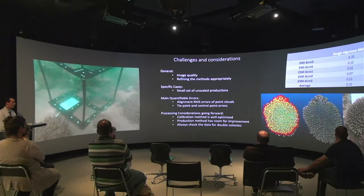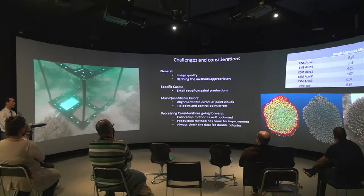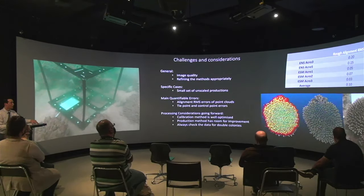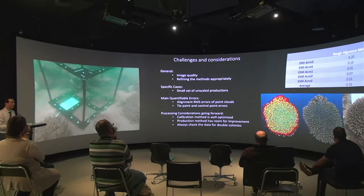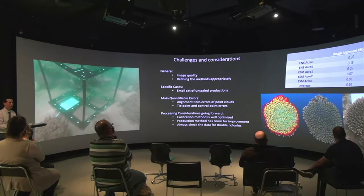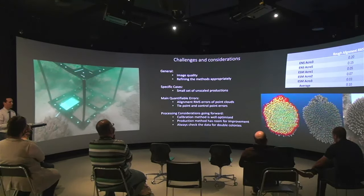It's always good to pick out errors you can quantify. Going back to what I said about the alignment, looking at the top right you can actually see how good our rough alignment was. ENS Acro 3 and ENS Acro 5 did require some scaling in the first epoch, so they're slightly worse. But looking at the ESM point clouds where I used the exact same methods and I knew they were scaled properly, we're looking at sub-millimetre alignment, which I think is really, really good — probably better than I'd expect, and better than what Lange and Perry were experiencing. So I will continue to use rough alignment until I see another reason not to.